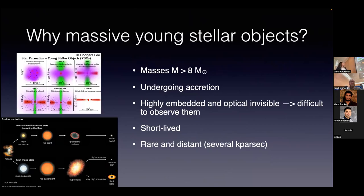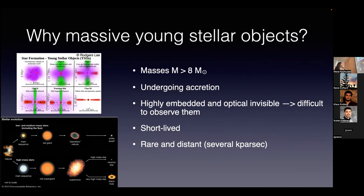First, I would like to start with why massive young stars are important. This schematic image shows young stellar object formation, mainly for low mass stars. We have a molecular cloud, then the collapse of the molecular cloud creates the protostar. As we go through the classes, we have the creation of a disc, which is important for transferring angular momentum. In some cases we have jets. The source is not visible at optical wavelengths and we can only observe them at infrared, mid-infrared, or radio wavelengths.